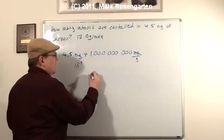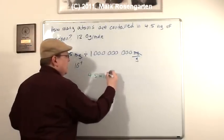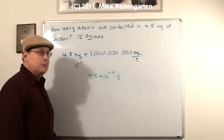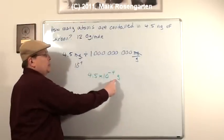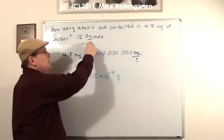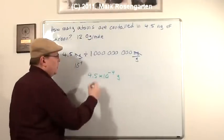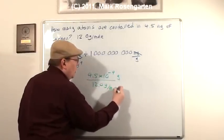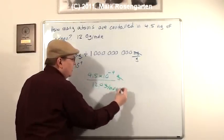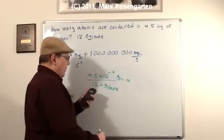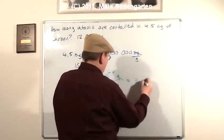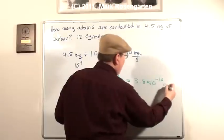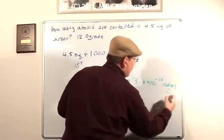This comes out to 4.5 times 10 to the negative 9th grams. Now, since carbon weighs 12.0 grams per mole, again, we've got grams we're trying to solve for. Grams is in the numerator of our conversion factor, so we have to divide by 12.0 grams per mole, so that grams will cancel out. And this comes out to 3.8 times 10 to the negative 10th moles of carbon.